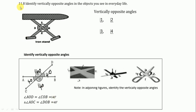Next, 11.8: Identify vertically opposite angles in the objects you see in everyday life. In this figure, we have to identify the vertically opposite angle. Angle 1 is vertically opposite to 2, and angle 3 is vertically opposite to 4. Here are the vertical opposite angles.